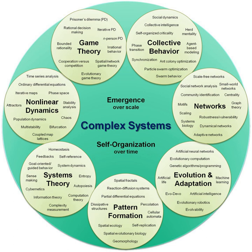The systems view was based on several fundamental ideas. First, all phenomena can be viewed as a web of relationships among elements, or a system. Second, all systems — whether electrical, biological, or social — have common patterns, behaviors, and properties that the observer can analyze and use to develop greater insight into the behavior of complex phenomena and to move closer toward a unity of the sciences. System philosophy, methodology and application are complementary to this science. By 1956, theorists established the Society for General Systems Research, which they renamed the International Society for Systems Science in 1988.